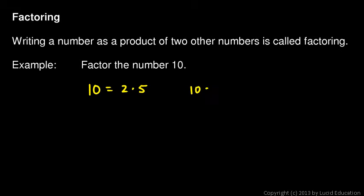We could have also written 10 equals 5 times 2, because the order doesn't matter. Multiplication is commutative. We could have also said 10 is equal to 1 times 10, or 10 times 1, but we're not going to concern ourselves with the factors 1 and the number. When we say factor a number, we generally mean to find the factors other than 1 and itself.